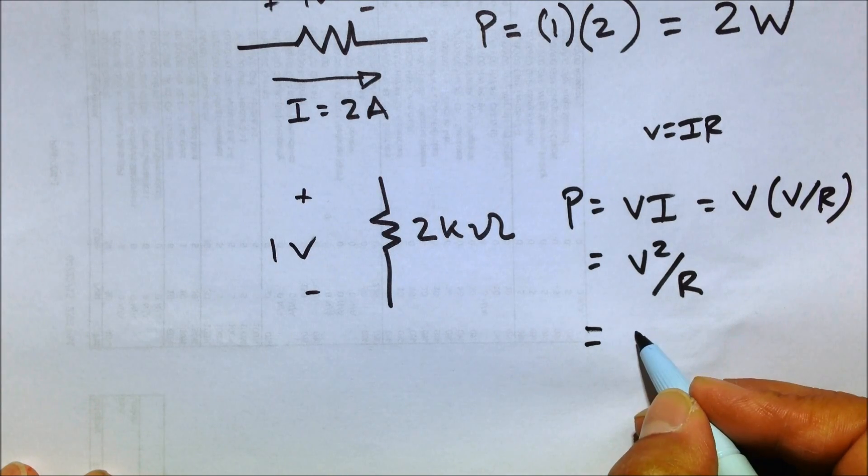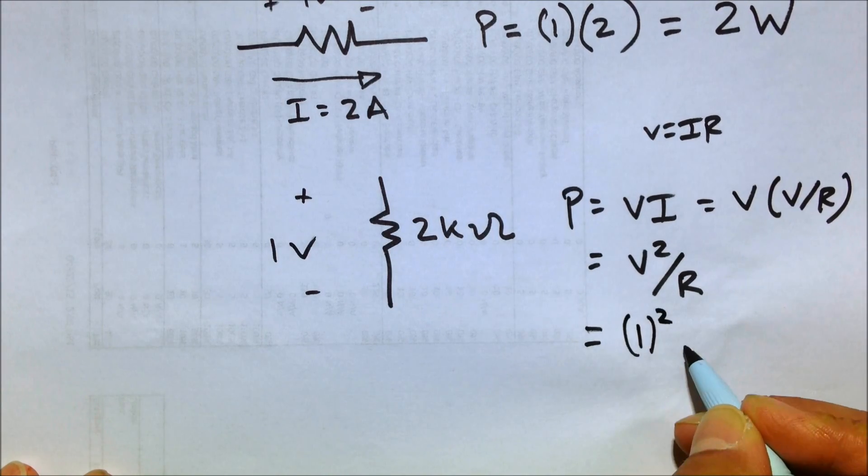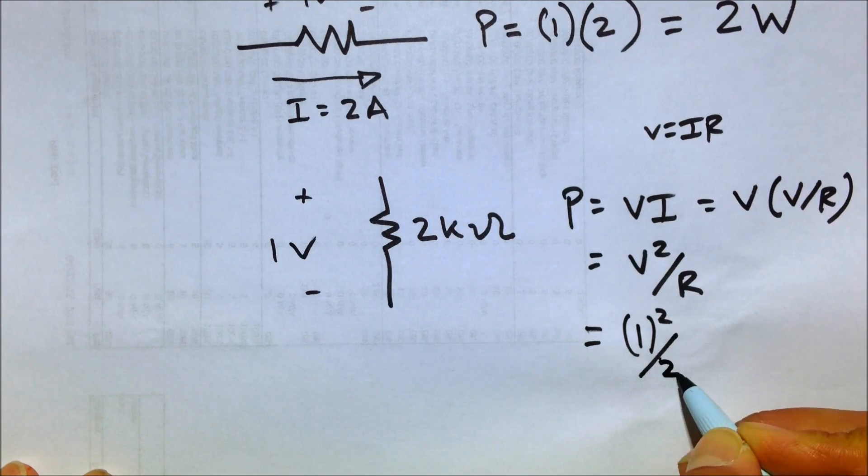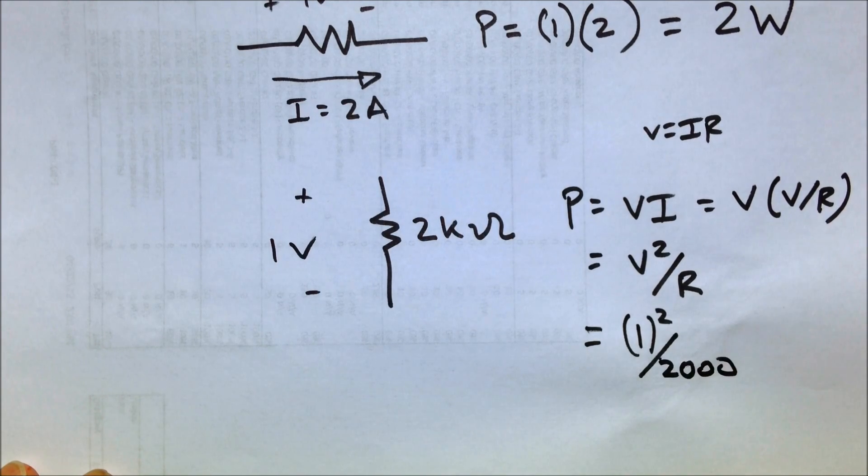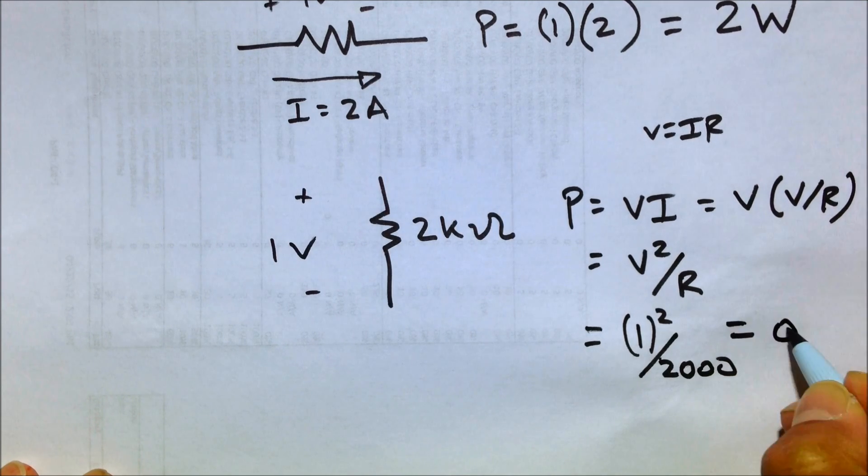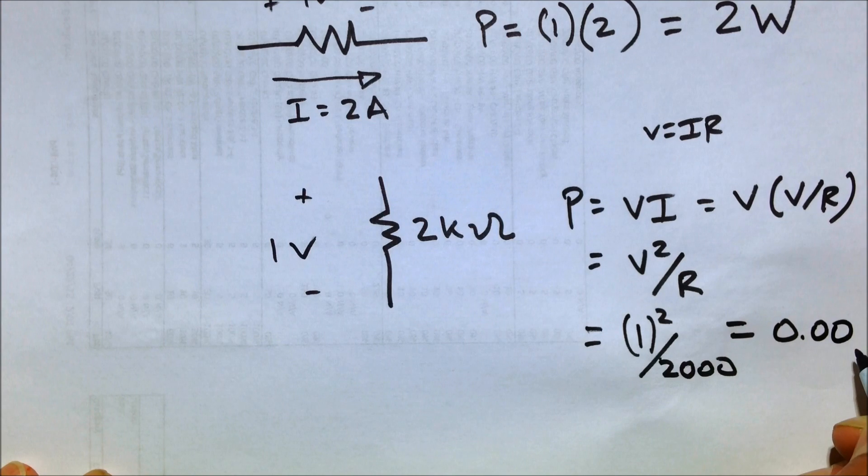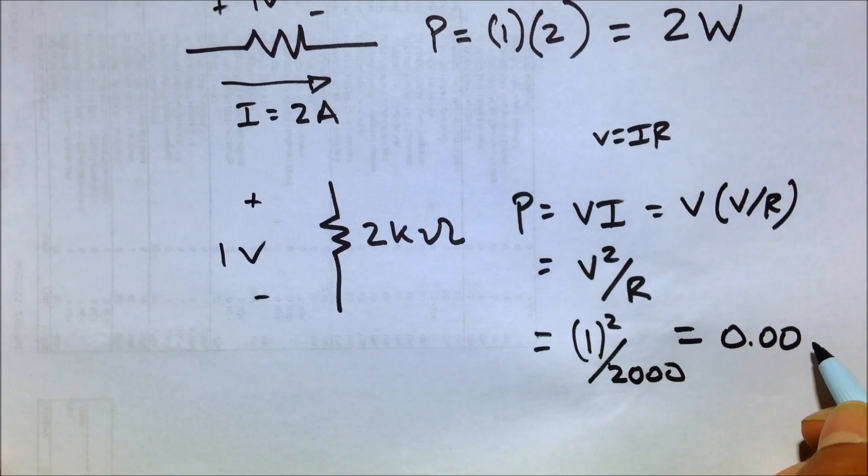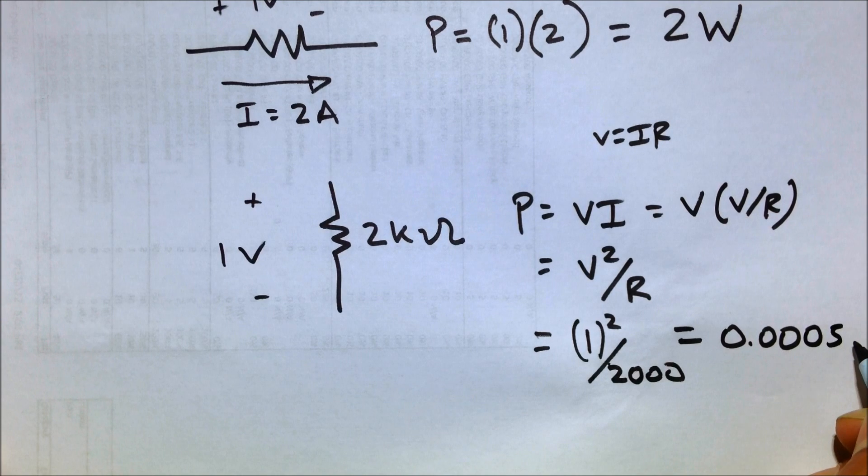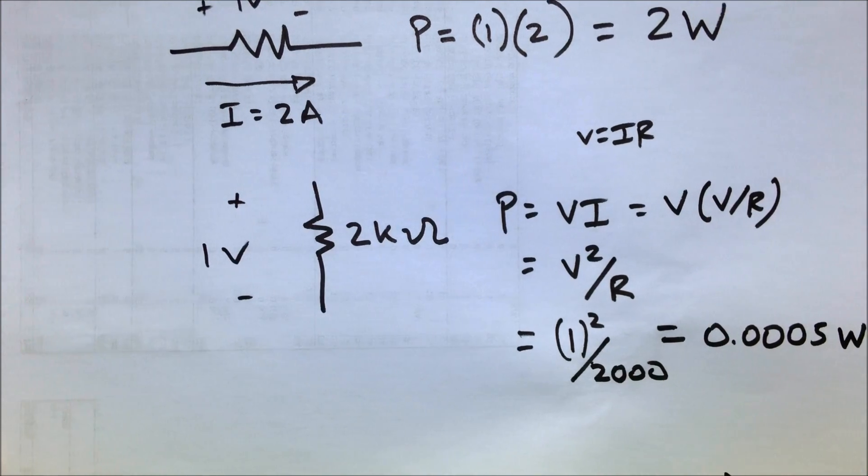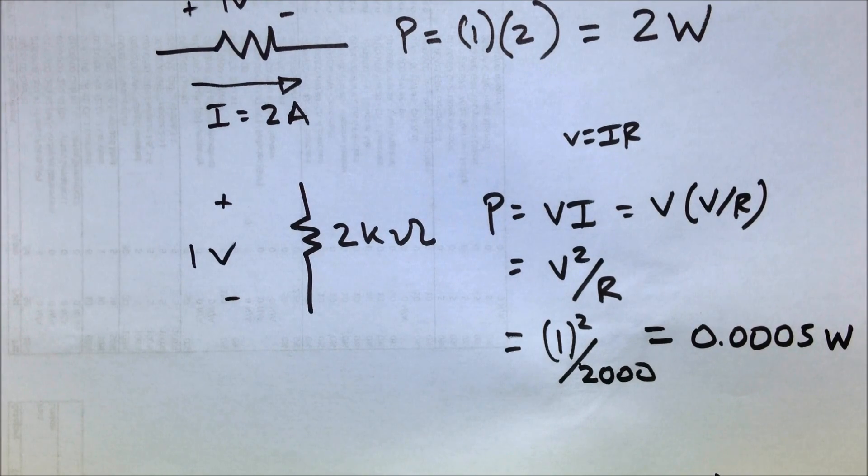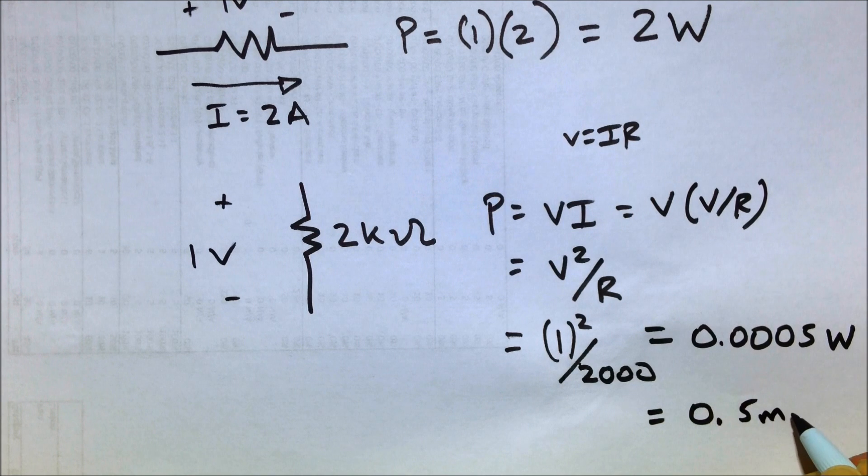V, as we know, is one volt squared, divided by R, which in our case is 2k or 2,000. And that equals 0.0005 watts. Let's go ahead and simplify that to 0.5 milliwatts.